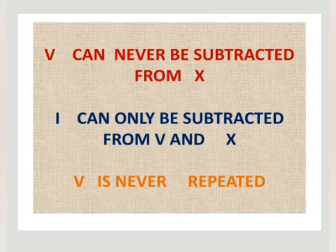I can only be subtracted from V and X. Did you ever see IC, ID like that? No. Not at all. And V is never repeated. That's why X, we are using for 10. V, we cannot repeat. That is a rule.